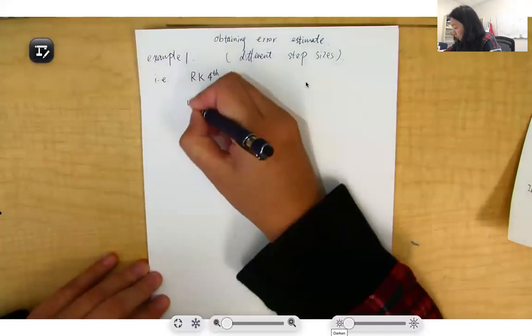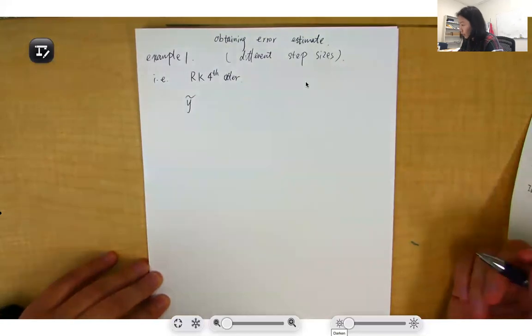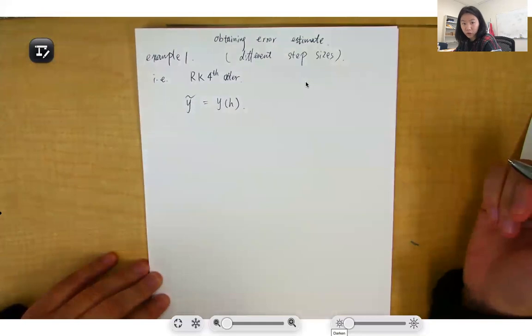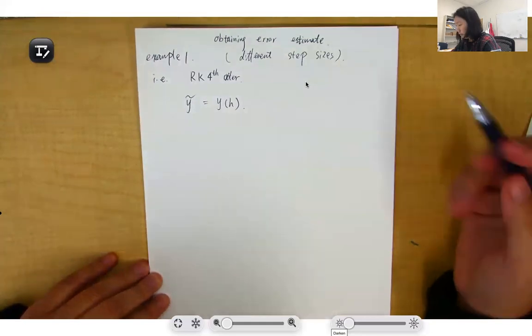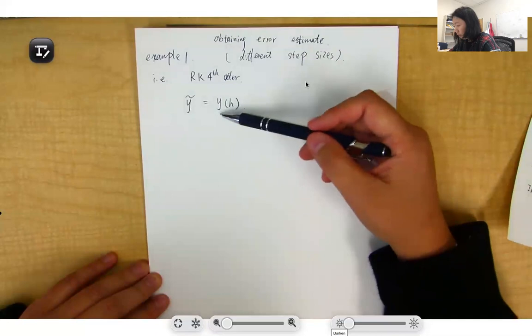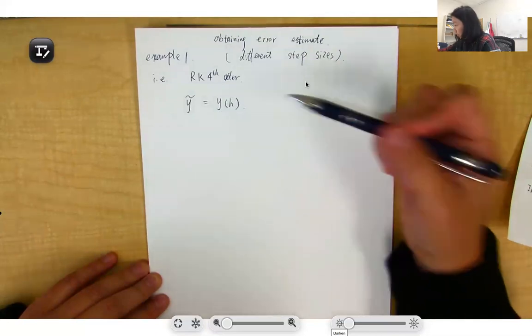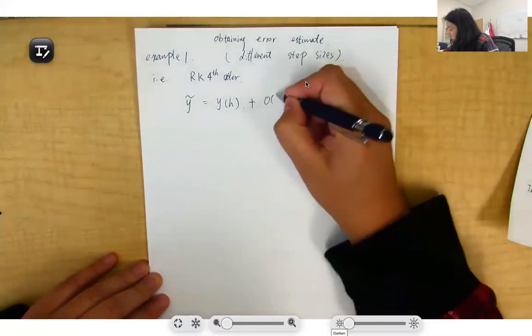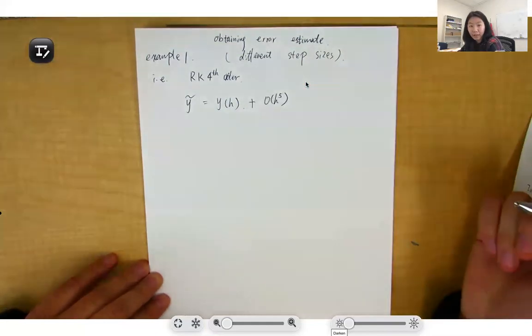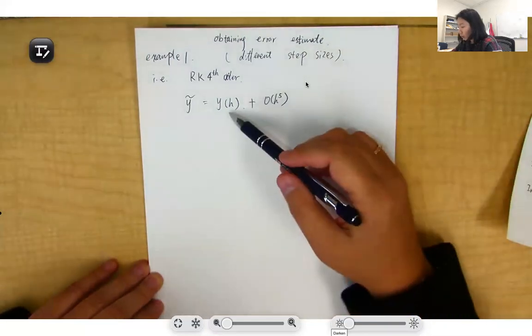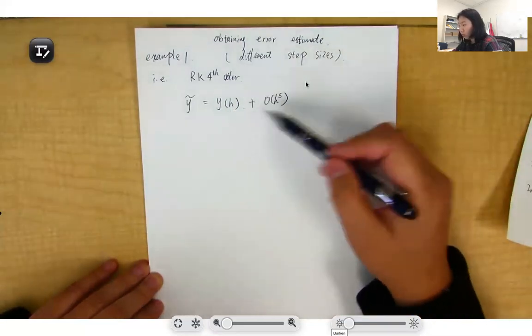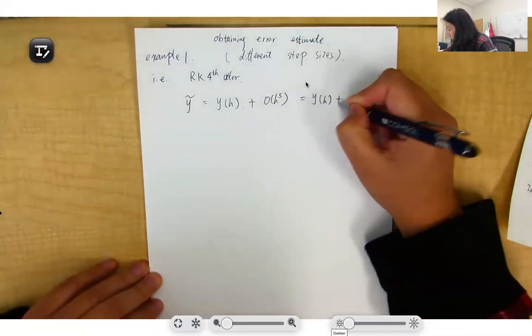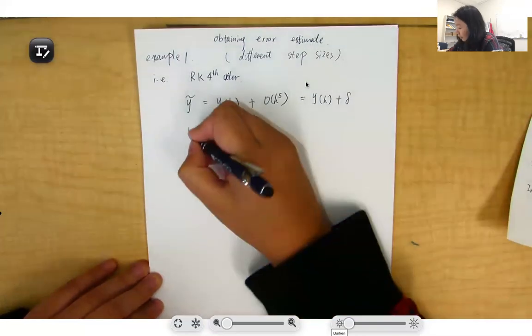Our true value y will equal the value obtained using step h with Runge-Kutta method. The local error σ will be O(h^5). So the true value is your Runge-Kutta value plus some error correction, which we can rewrite as y_h + σ.